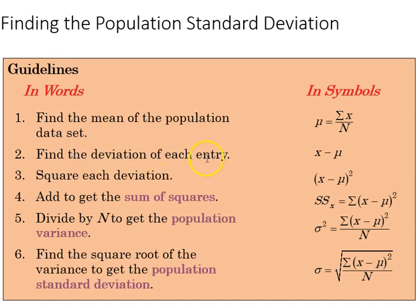We then find the deviation of each entry in the data set, as we did with the stock prices, where we were just looking at the deviation. In that case, we weren't looking at the square of each deviation. What's different about the population standard deviation is that we're going to be looking at the square deviations, and that's step three. After that, we then get the sum of the square deviations as step four.